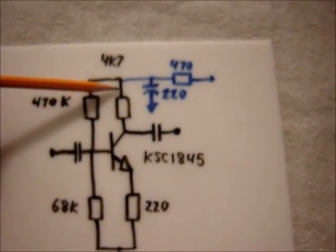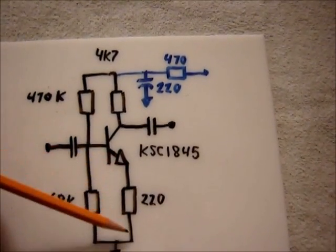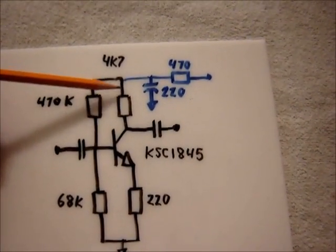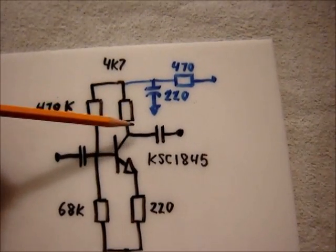So having a varying signal on the input causes the current to vary on this output side, and the varying current creates a varying voltage, and we tap off of that and send it on.